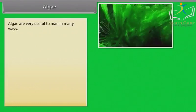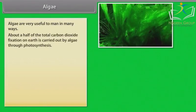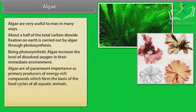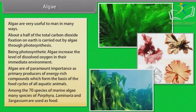Algae are very useful to man in many ways. About half of the total carbon dioxide fixation on earth is carried out by algae through photosynthesis. Being photosynthetic, algae increase the level of dissolved oxygen in their immediate environment. Algae are of paramount importance as primary producers of energy-rich compounds. Among the 70 species of marine algae, many species of Porphyra, Laminaria, and Sargassum are used as food.